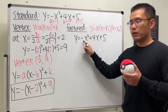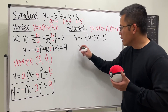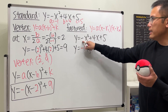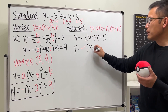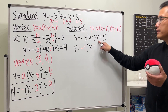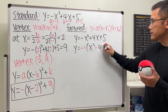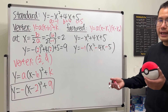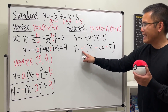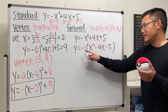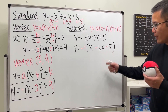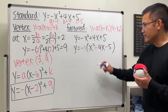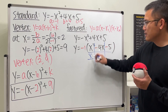We have a negative in front of x squared, so the first step is to factor out negative 1. y equals negative 1 times the quantity in parentheses. Originally negative x squared becomes positive x squared after factoring out negative 1. Originally positive 4x becomes negative 4x. And 5 divided by negative 1 is negative 5.